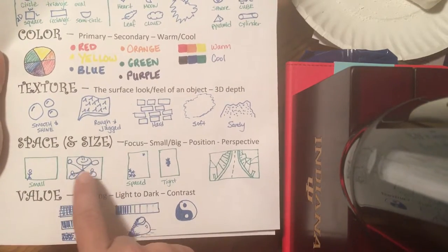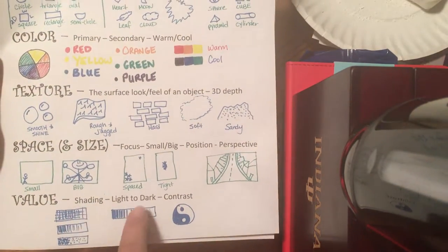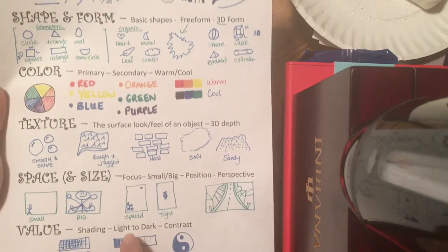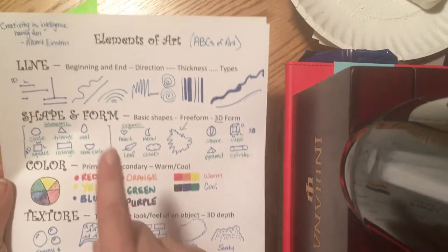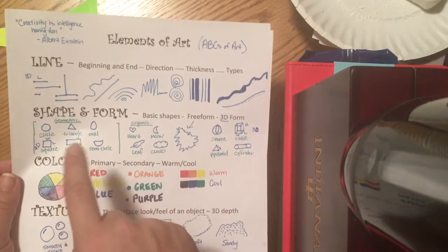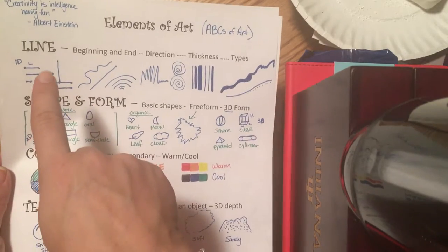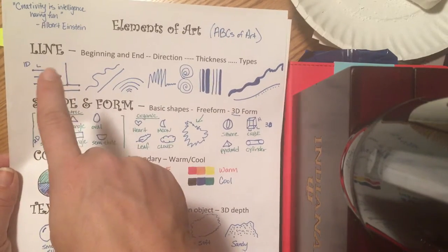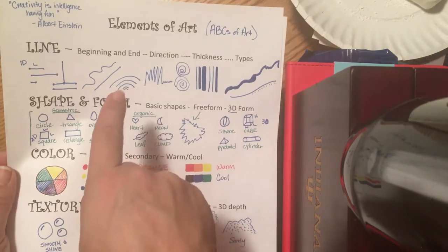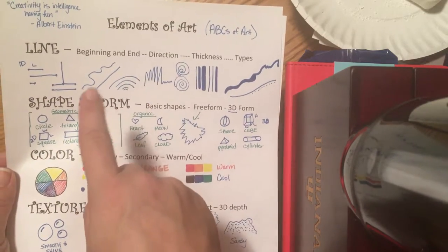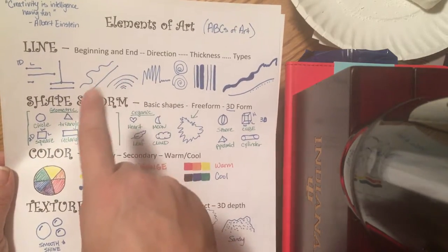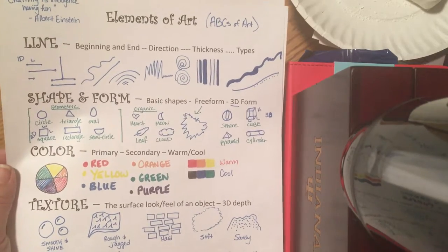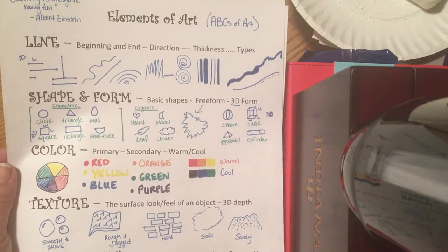Space and size helps us know where to put things on the paper, and value shows shading from the light that's cast onto an object. We're going to work here, and many of you have worked on lines before — you can do all different lines, curvy lines, straight lines, a rainbow — all kinds of things that set up your art.